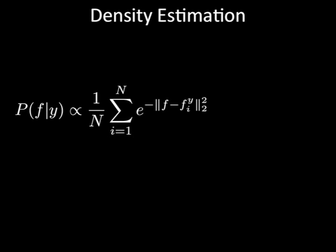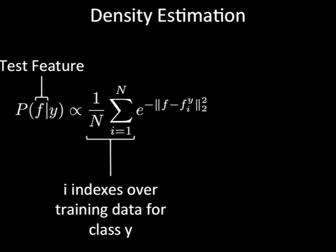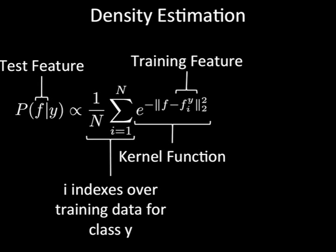In the more general case, to compute the model for P of F given Y for a test feature F, we need to sum over all instances of the class Y in the training data, find the feature value for that training instance, and put a Gaussian kernel at that point. So this is just explaining in equations what we just did graphically. This tends to be expensive as the number of features grows, because you need to do some processing for every feature in your training set. This operation is also performed many times, so it can't be that slow.